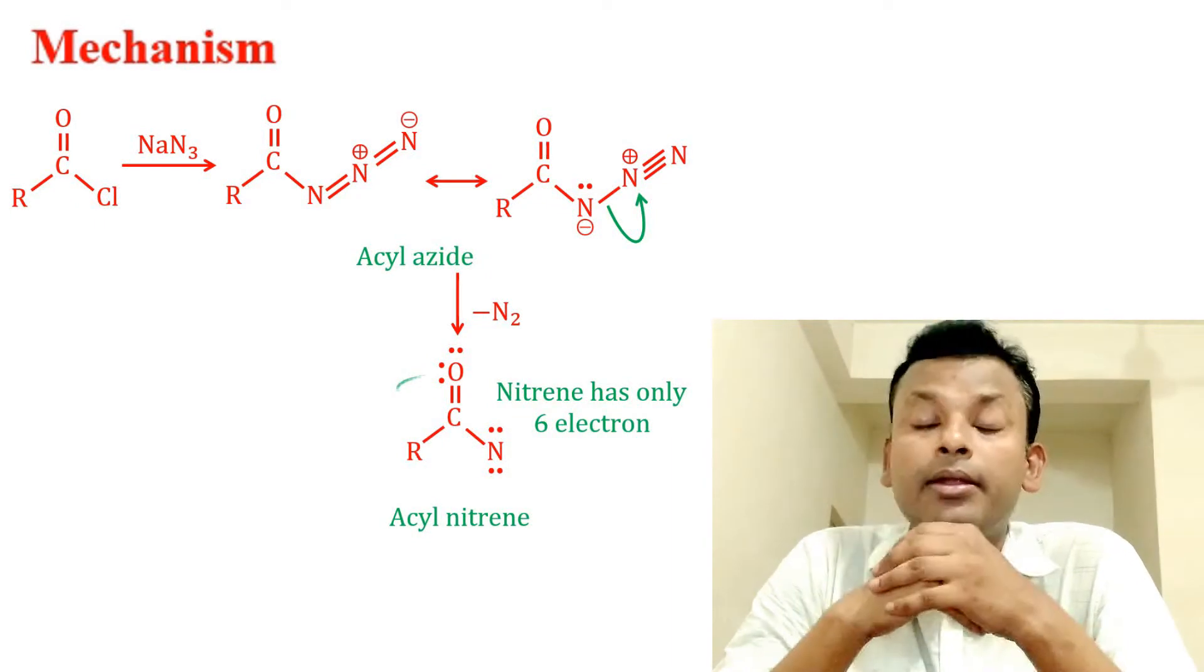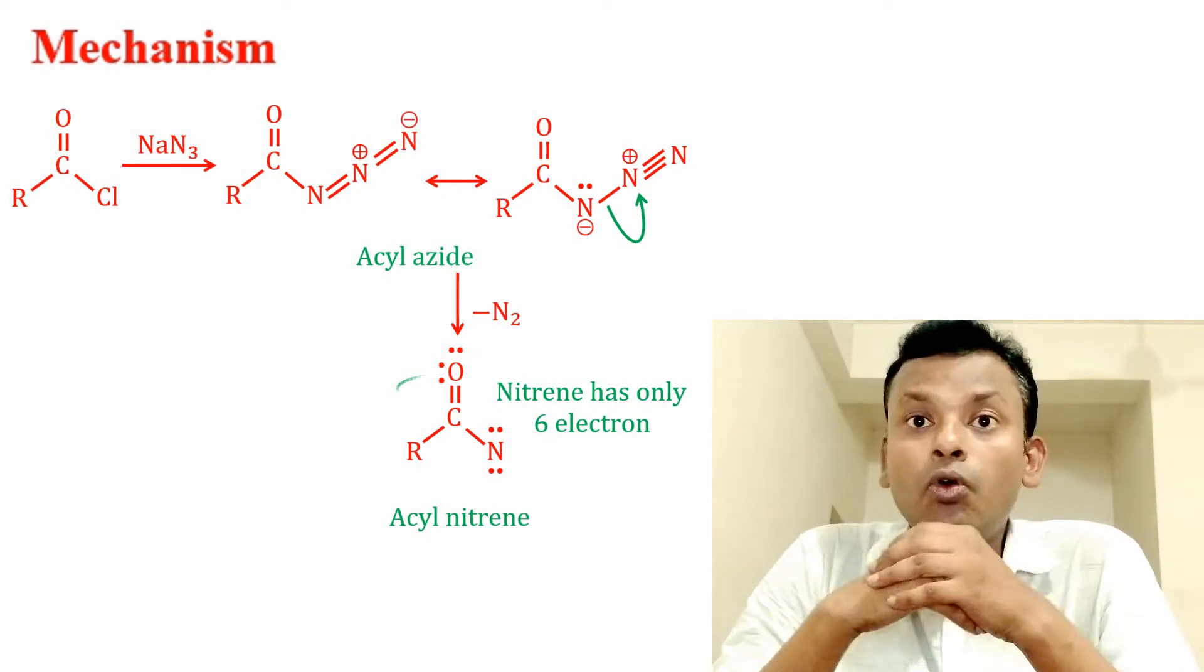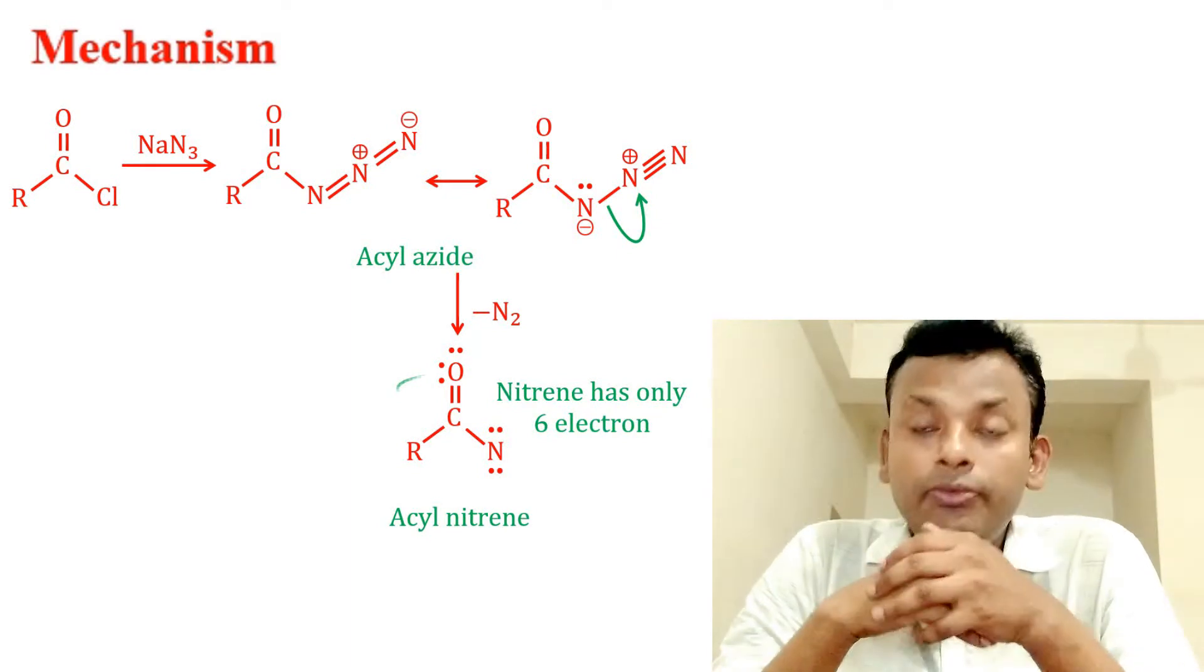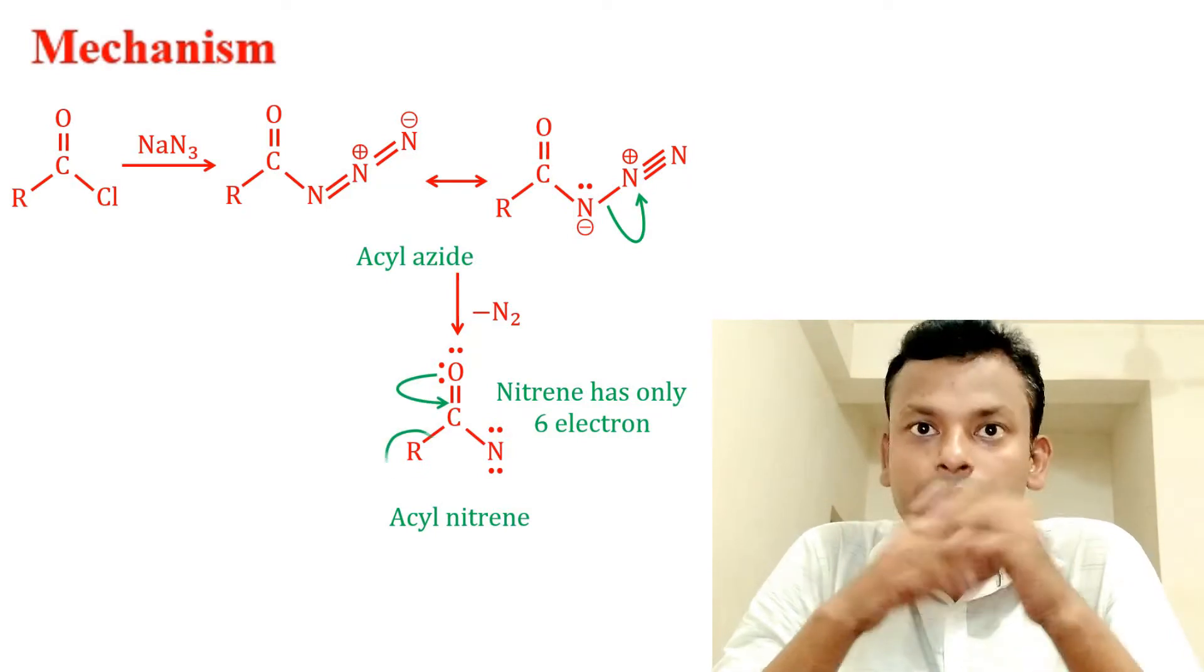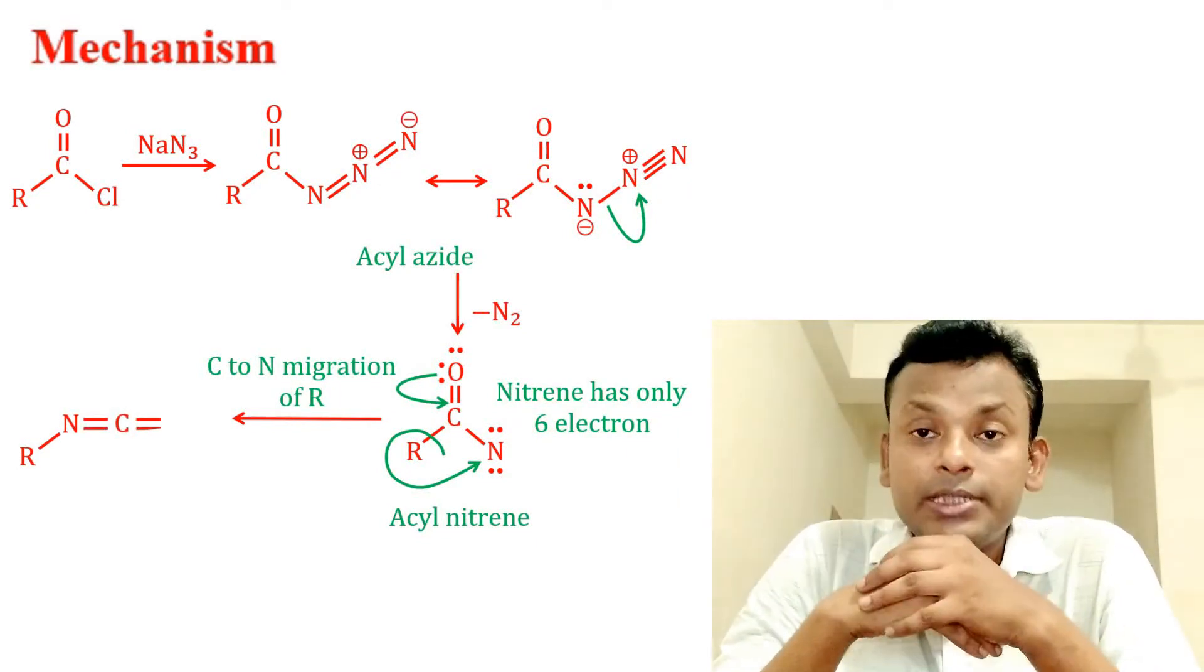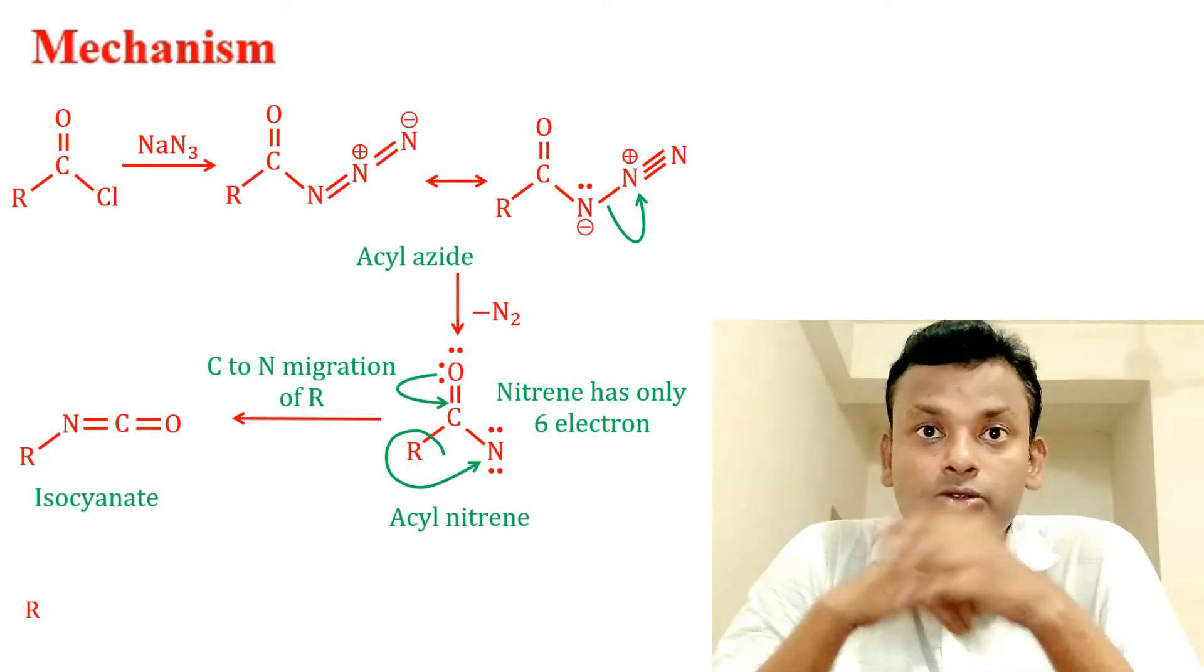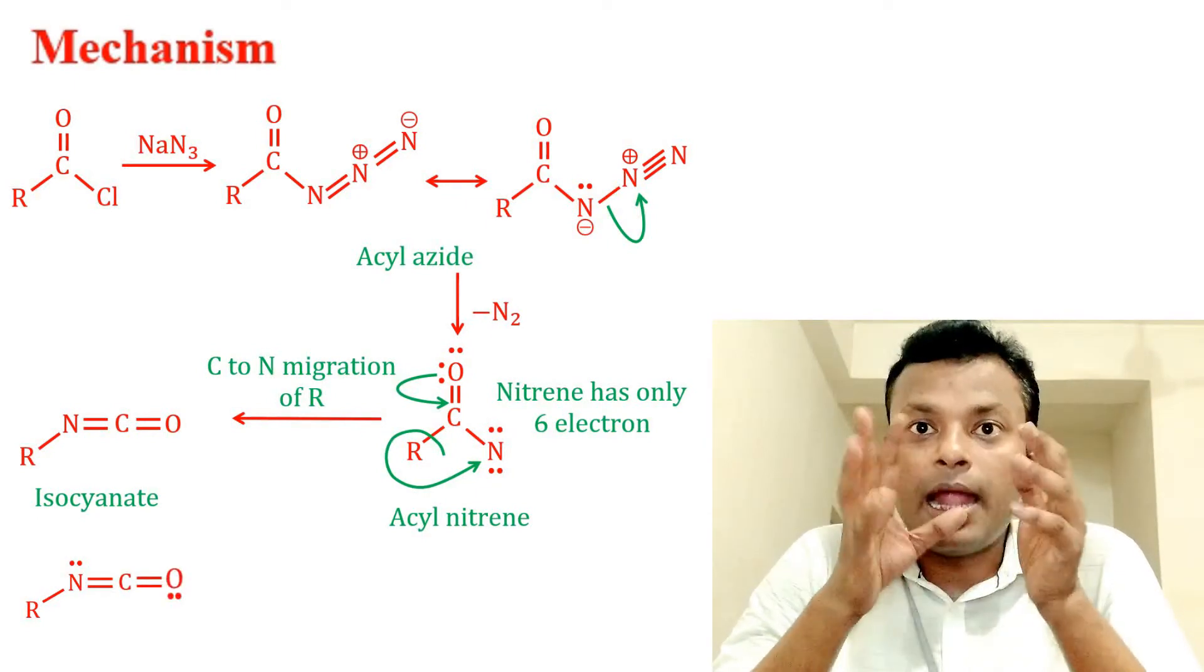The same type of migration takes place to give isocyanate. The substituent R migrates from carbon to the electron-deficient nitrogen atom of the nitrene. Isocyanates are unstable to hydrolysis, attacked by water on the carbonyl group.